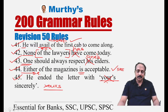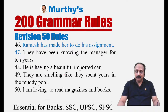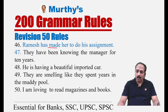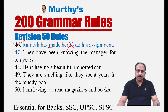Sentence forty-six: 'Ramesh has made her to do his assignment.' Here 'made' is a causative verb. Causative verbs include make, help, have, get. In active voice, 'make' and 'help' do not take the preposition 'to' before the base verb. So 'to do' is incorrect. The correct sentence: 'Ramesh has made her do his assignment.'